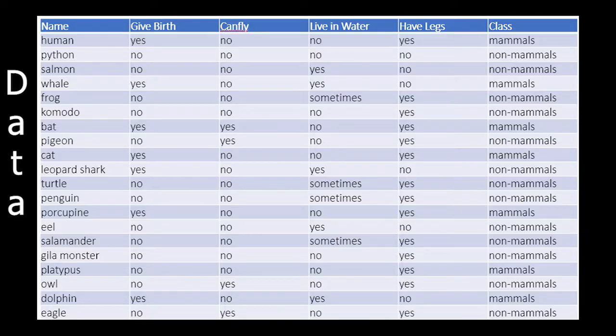Here in this video, we are going to explain an example of bias and classification.